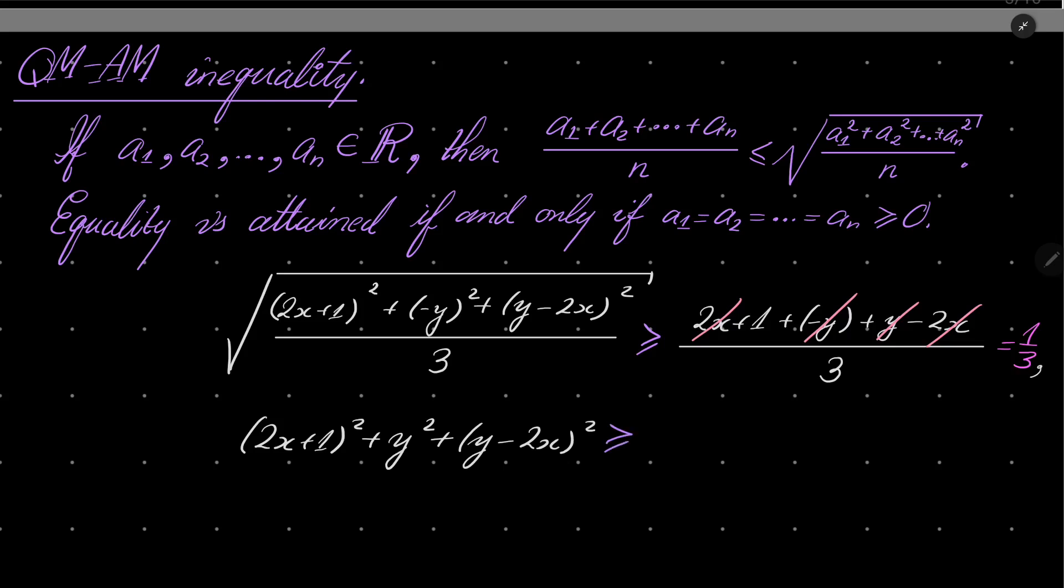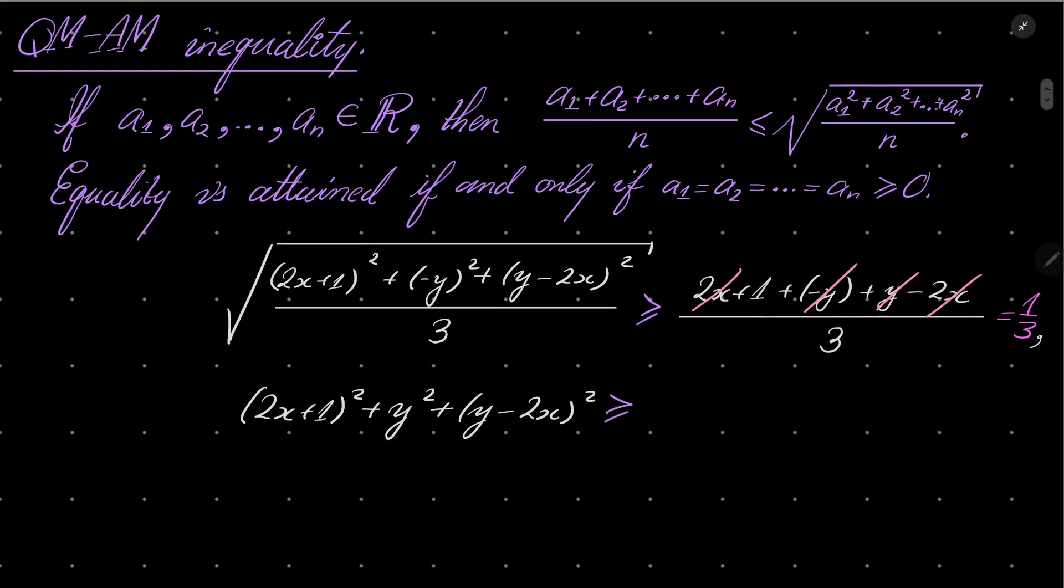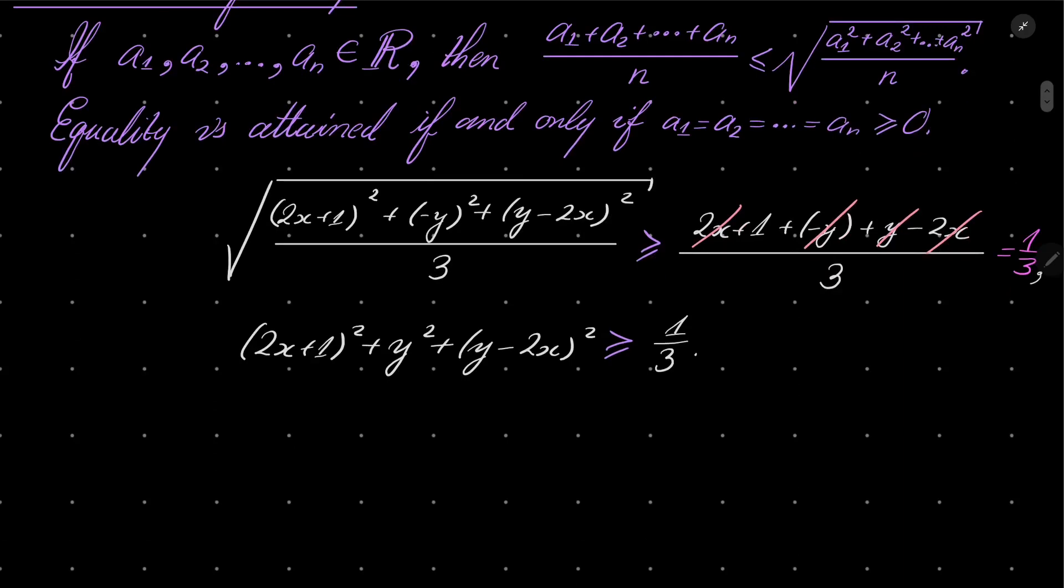Actually, 1/3 squared is 1/9 times 3 back to 1/3. Okay, so we know that this inequality is always true.